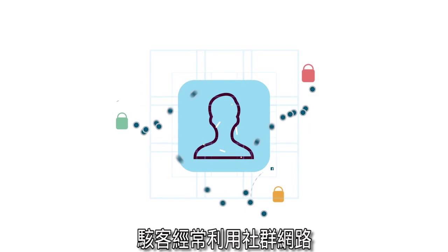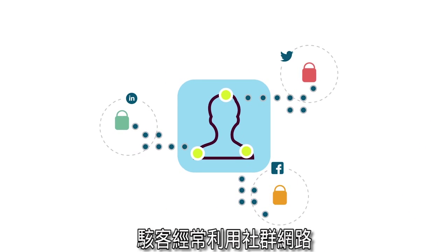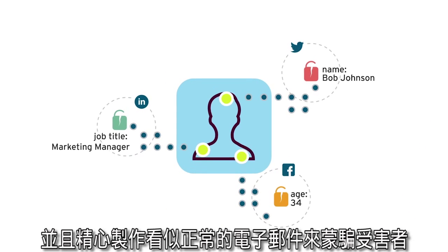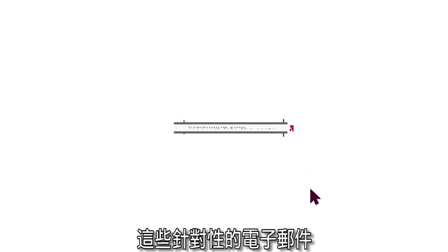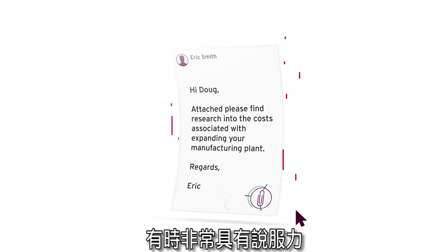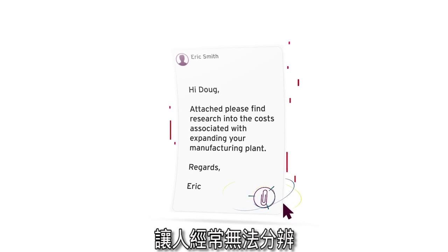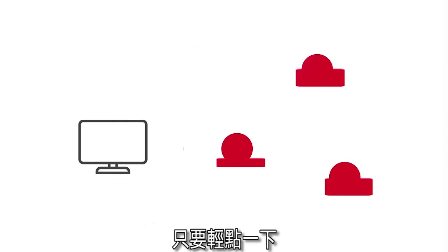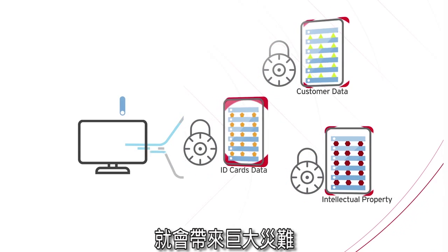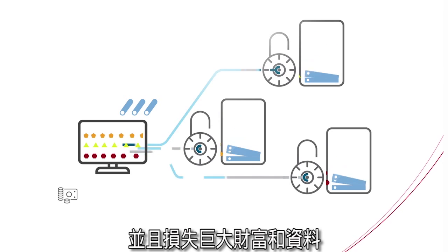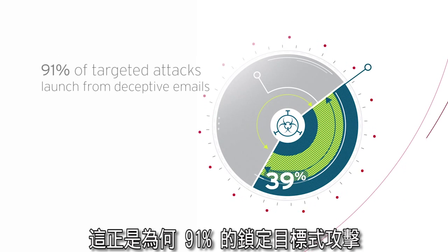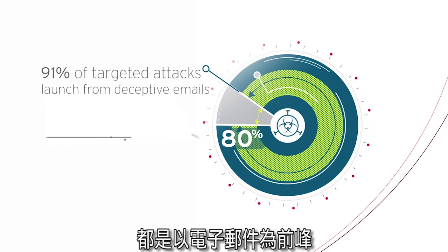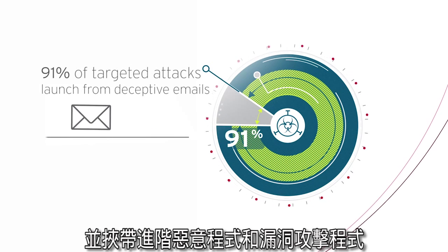Frequently, hackers will exploit social networks and craft legitimate-looking emails to deceive their victims. These targeted emails can be very convincing, and mistakes often occur. One click can wreak havoc and expose a fortune in data. That's why 91% of targeted attacks launch from emails that deliver advanced malware and exploits.